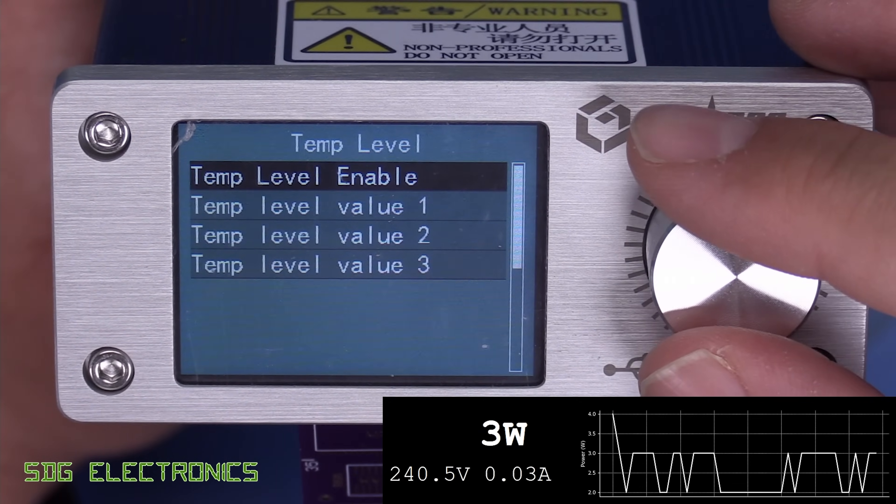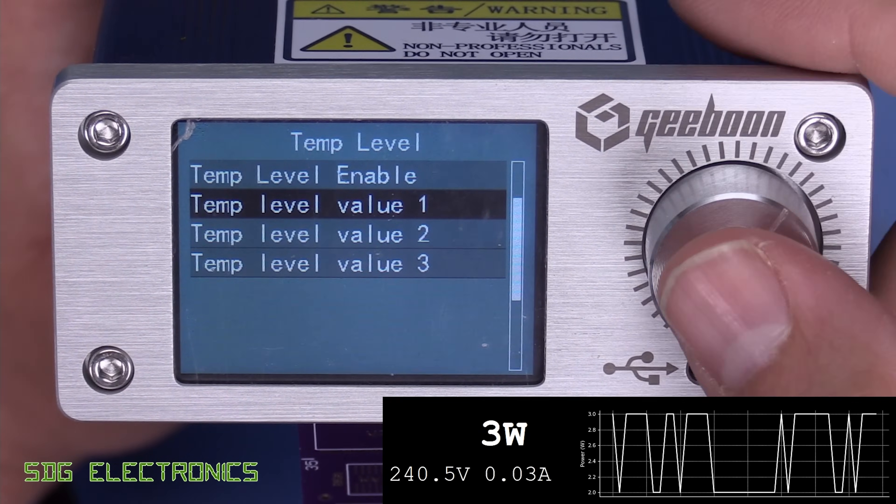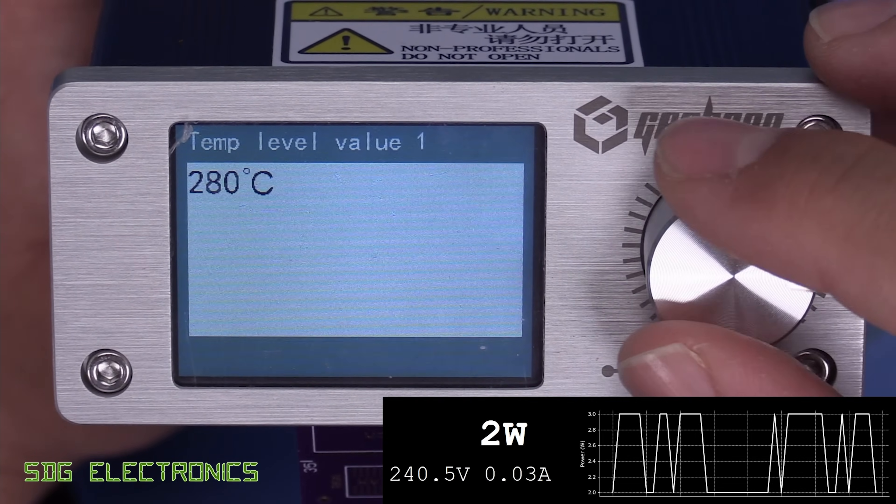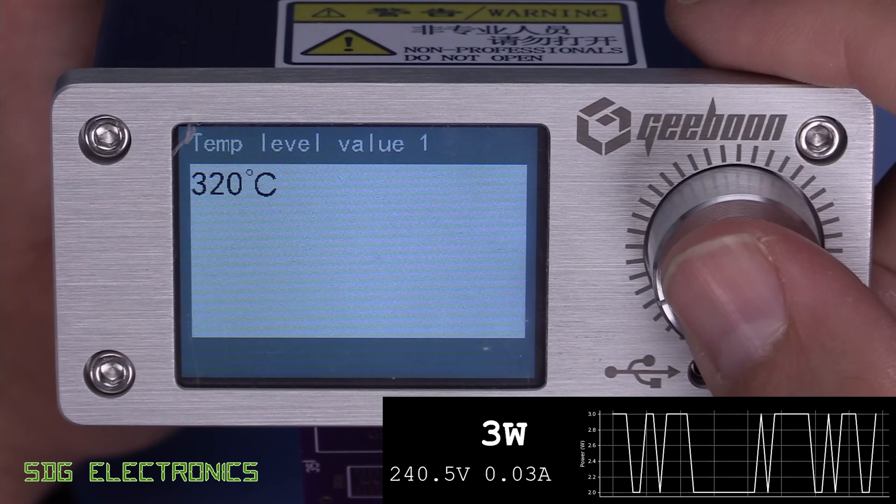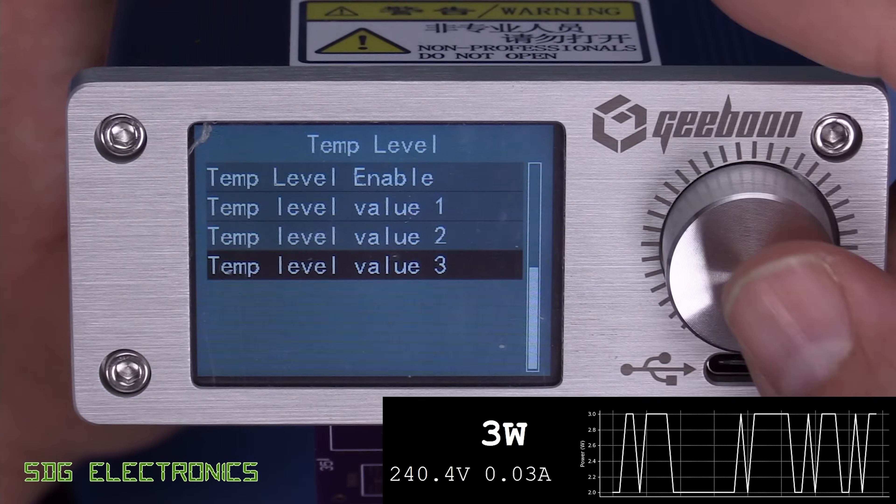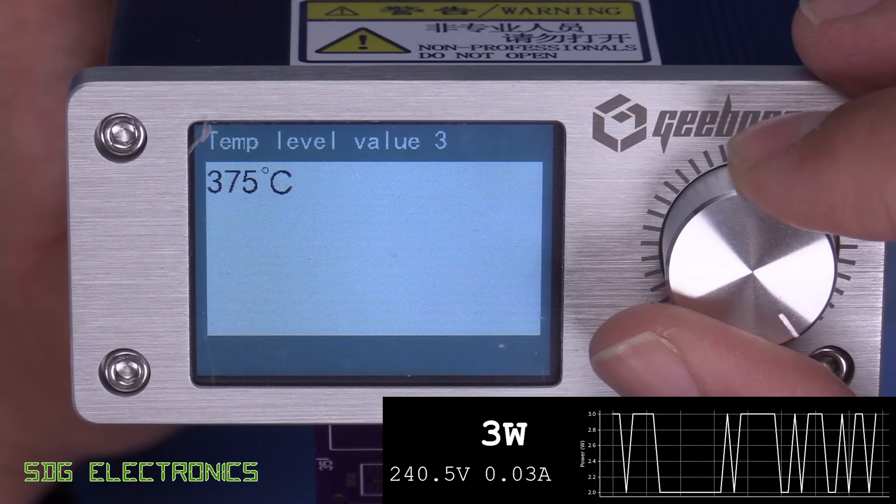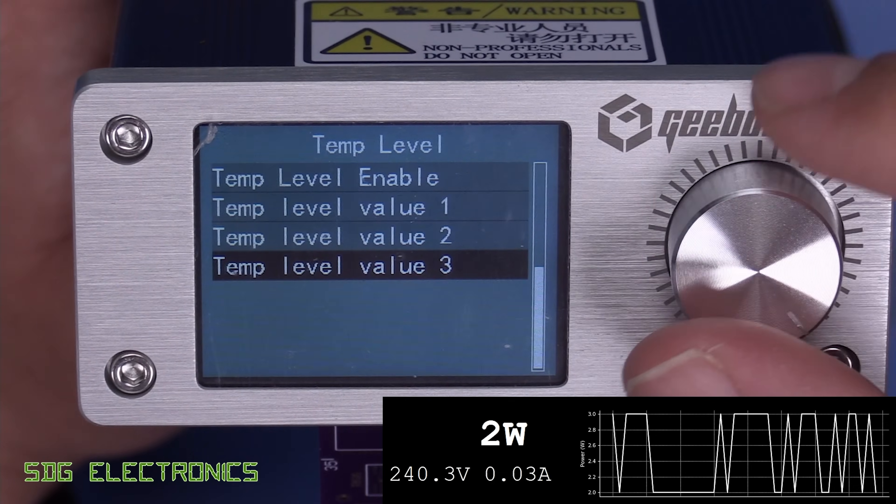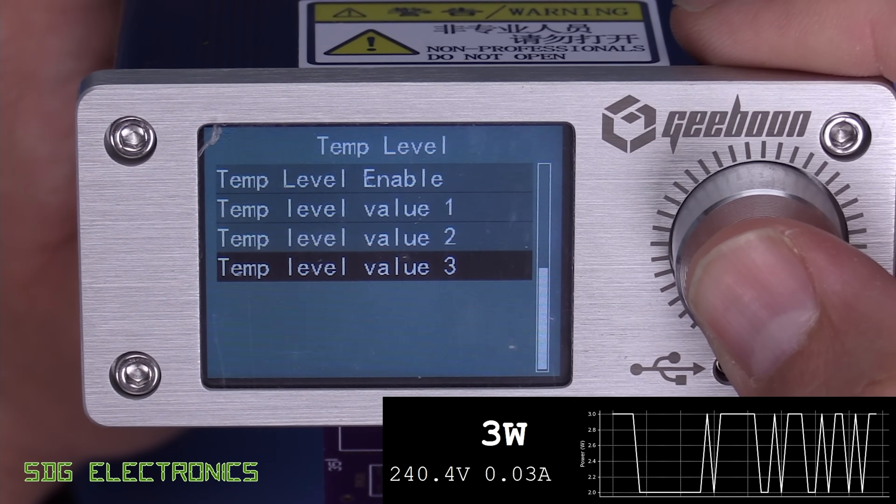Then we've got temperature level. And these are basically those presets that we saw on the front screen. So we'll set these to 320, 350, and 375, which are quite reasonable values. And then to go back, we hold the encoder.